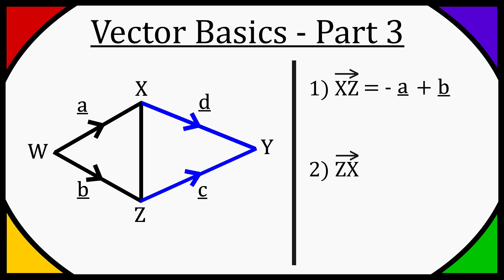So similar technique to before, we want to go from Z to Y and then Y to X. Well, we're just going to have a positive C vector and then a negative D vector, and that's pretty much it.